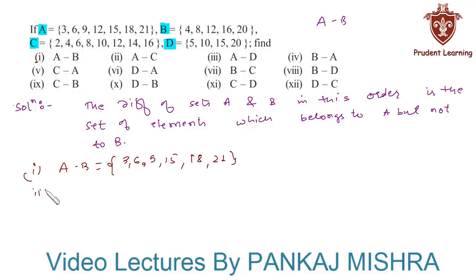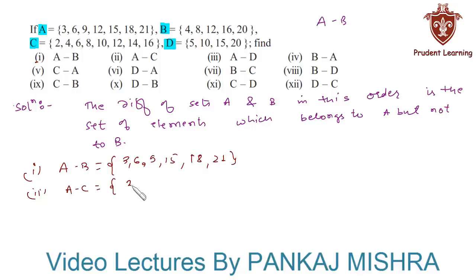Next we have to find A minus C. This simply means the set of all elements that are in A but not in C. Here we have 3, 6, 15, 18 and 21 which are present in A but not in C.